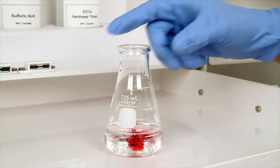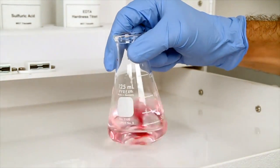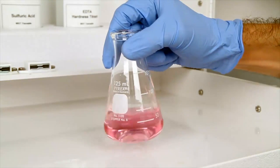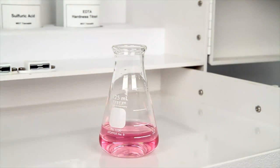The sample will turn red if hardness is present. If the sample turns blue, then hardness is zero and the test is complete. In this example, the sample turned red, indicating that there is hardness to be titrated.